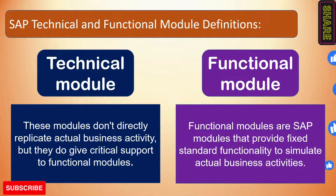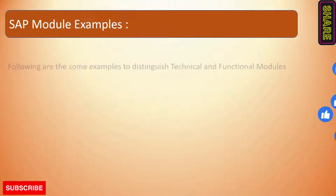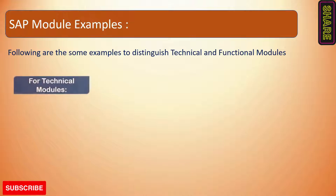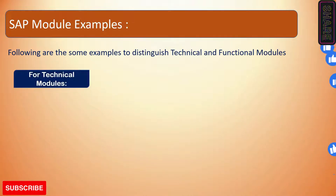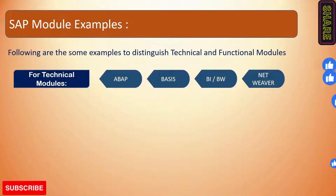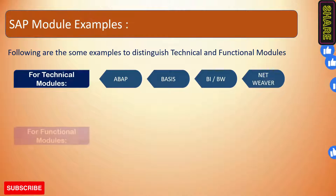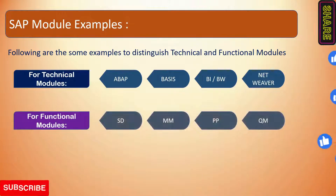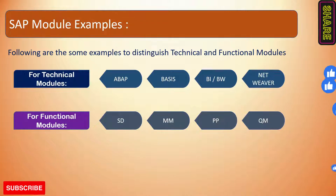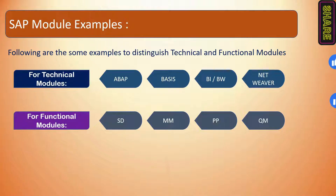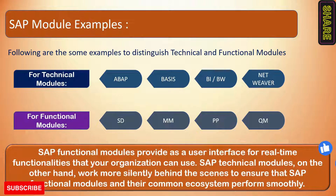On the next slide you will see some examples of technical modules: ABAP, Basis, and BW are classic examples of technical modules. For functional modules, there are four examples: Sales and Distribution, Material Management, Production Planning, and Quality Management — not quantity management, Quality Management.